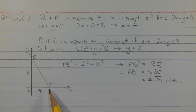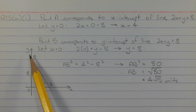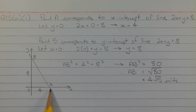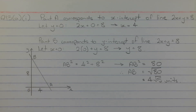A and B form a right angle triangle with the x-axis and the y-axis. So we need the x-intercept and the y-intercept of the line 2x plus y equals 8. Then we can use Pythagoras' theorem to find the length AB.